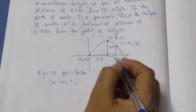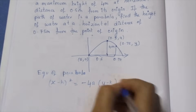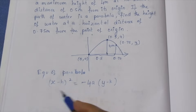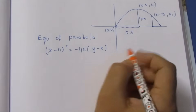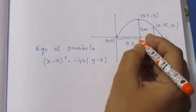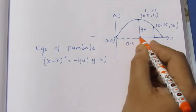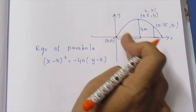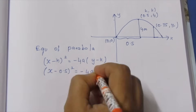...equal to negative 4a into y minus k. This is the general form: x minus h and y minus k, where h and k are the vertex coordinates. The distance from the x-axis and y-axis gives the origin h, k. Here x-axis is at 0, the horizontal distance is 0.5, and y-axis is 4 meters. So the vertex h, k gives us the equation: (x minus 0.5) squared equals minus 4a into (y minus 4).